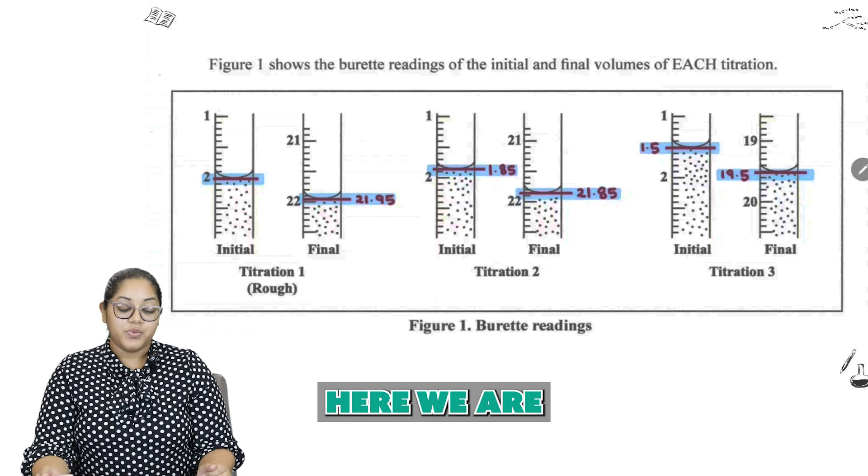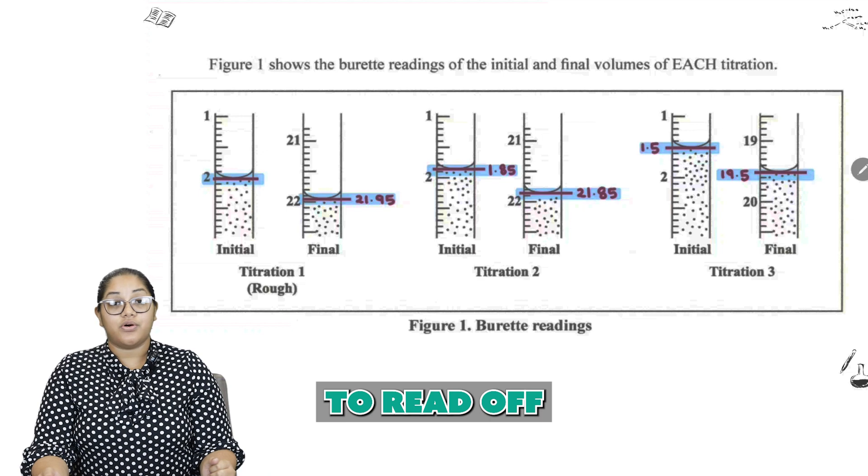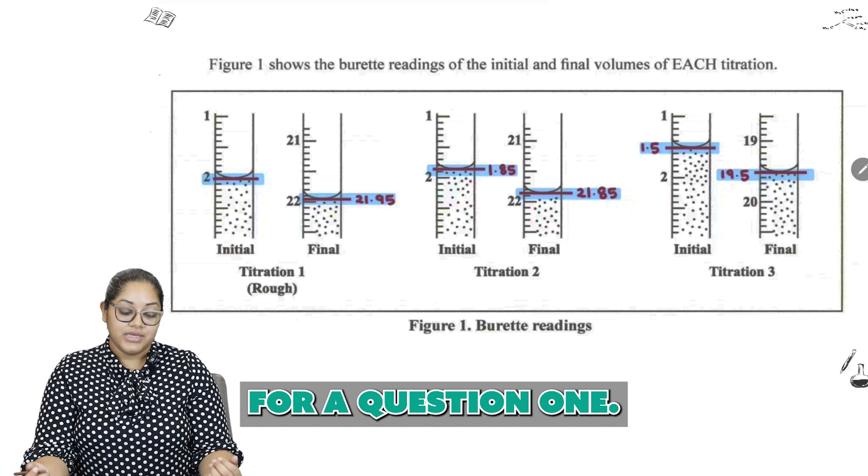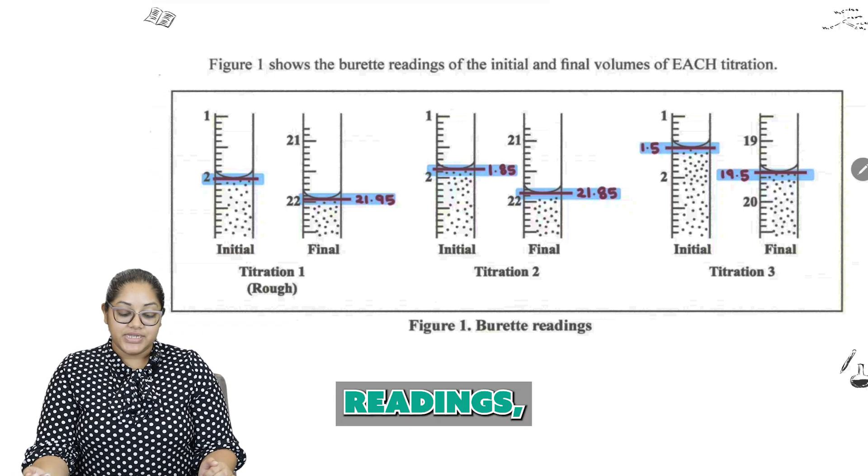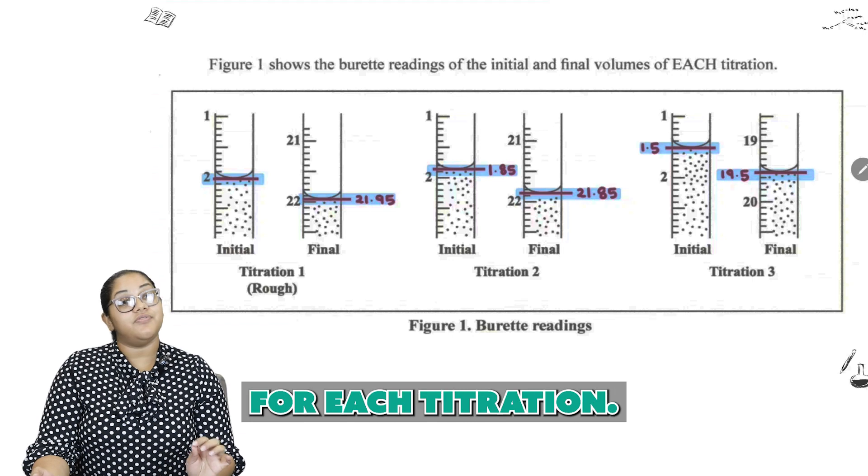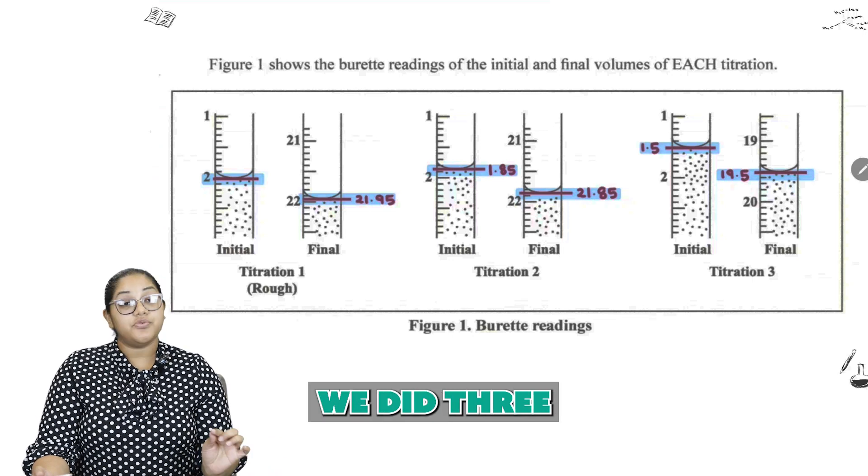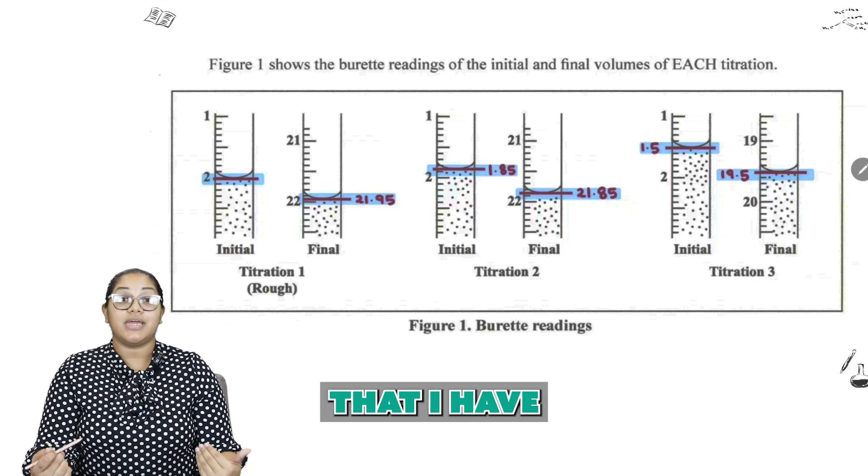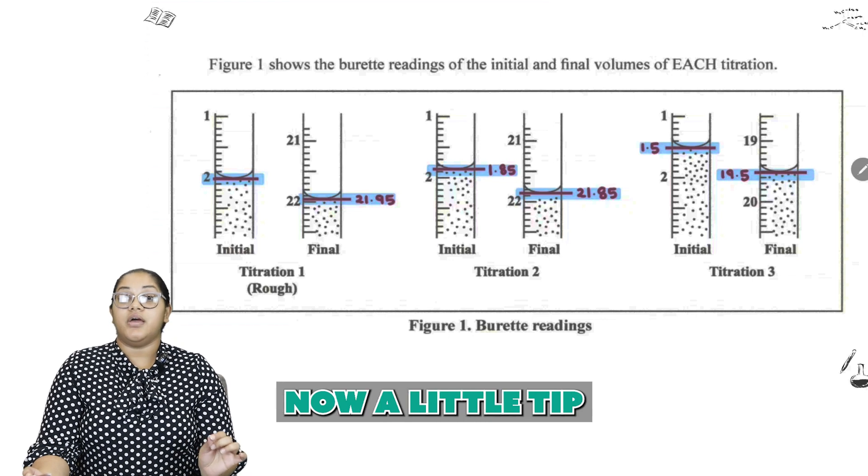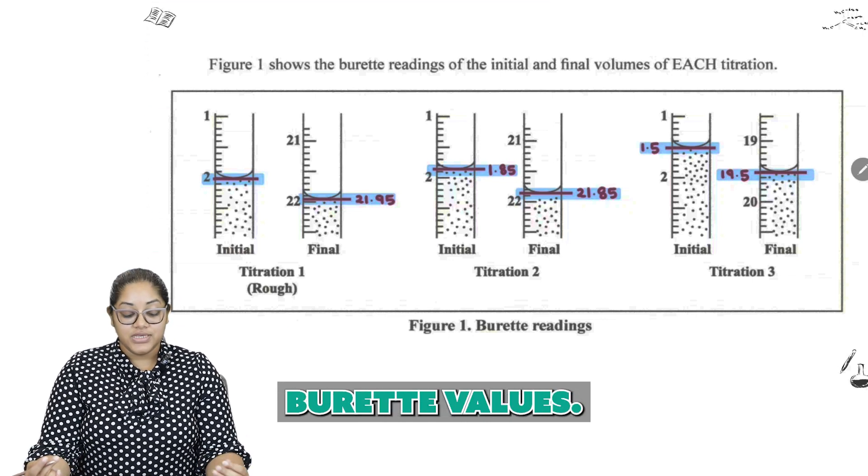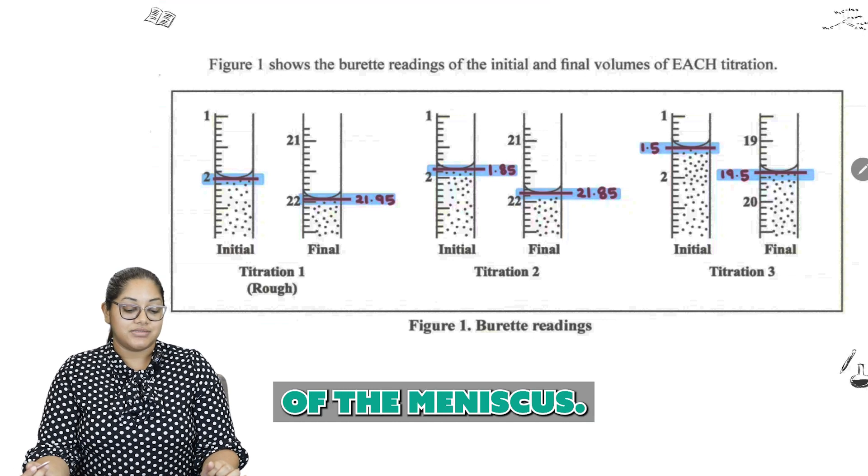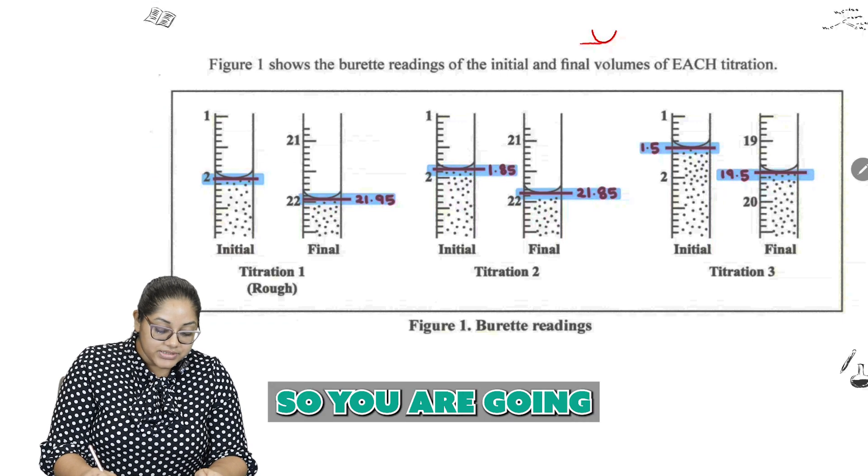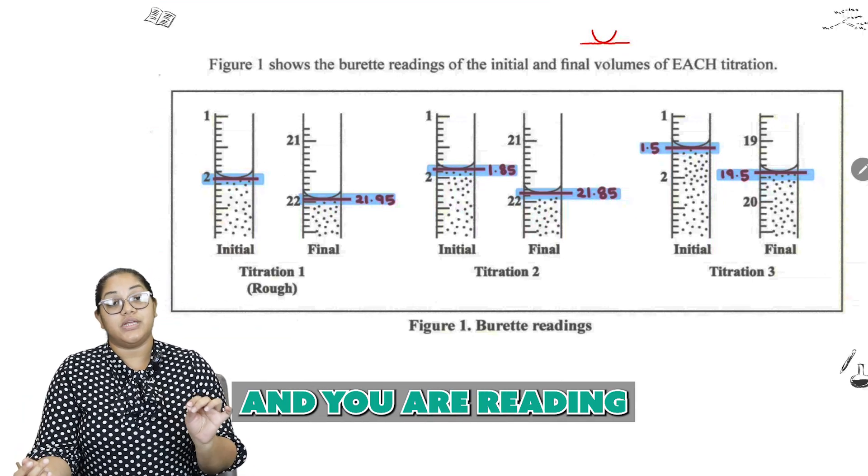Part 2 here, we are given a figure, and we need to read all of the values and insert it into a table. It's something very common for a question 1. So we are given the burette readings, the initial and final volumes for each titration. So notice we did three titrations in total. Now a little tip for reading all of the burette values. You are looking at the bottom of the meniscus. The meniscus would be the curvy part that you are seeing. So you are going to draw a line, that's the easiest way to do it, and you are reading all of that value.